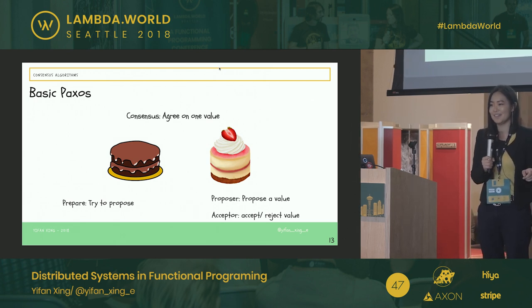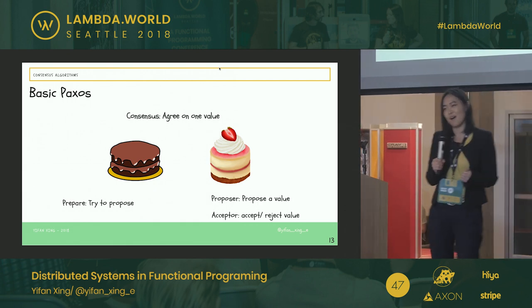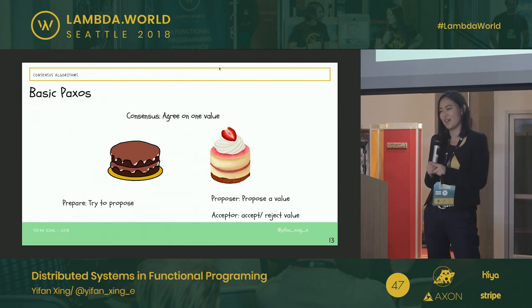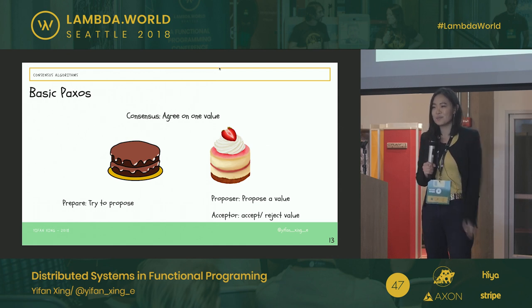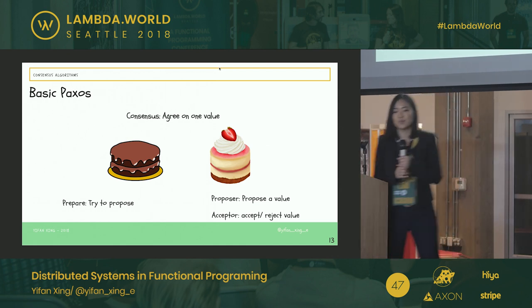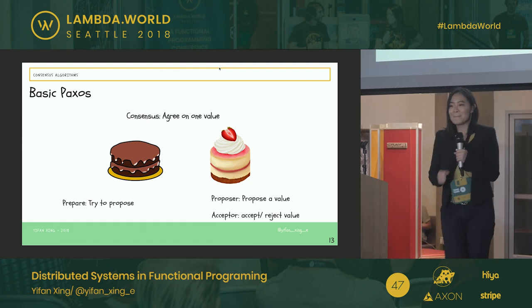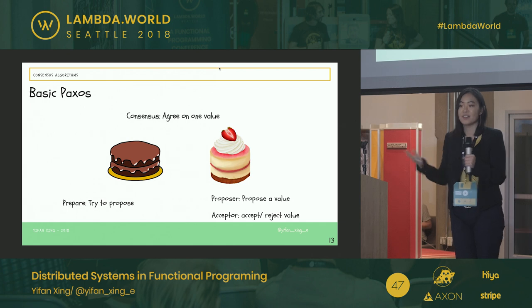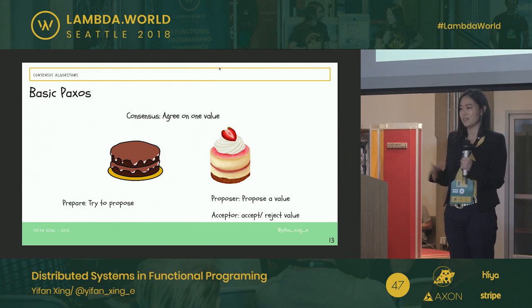Let's talk about cakes. How many of you have the same problem choosing between chocolate cake and cheesecake? As a group, I assume all of you like those cakes. After this talk or after the conference, we're going to go out and buy a huge cake. But the problem is we can only pick one — it has to be either chocolate cake or cheesecake. So how do we work this out? How do we have consensus as a big group?